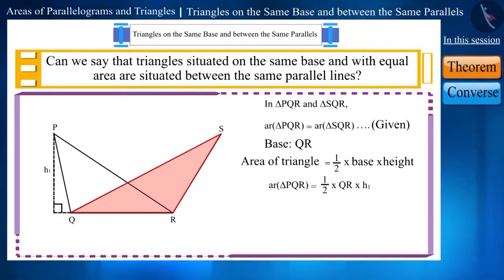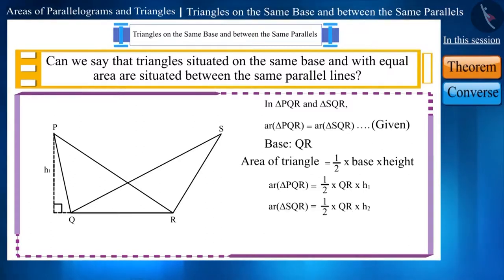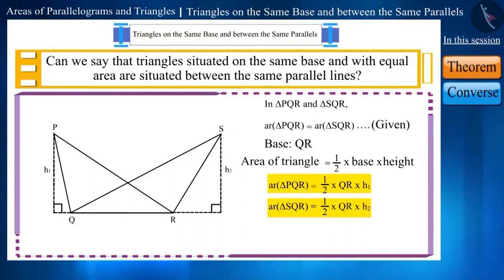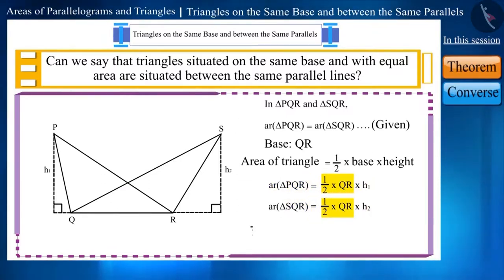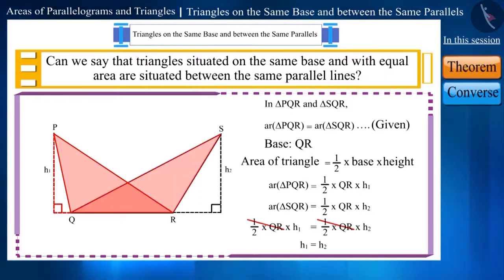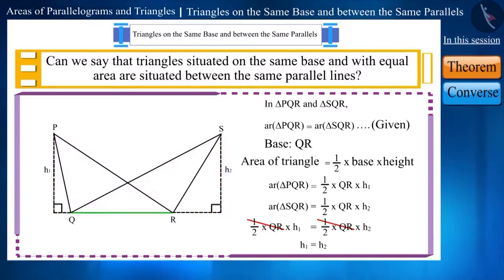Similarly, in triangle SQR, we can use the formula for the area of a triangle and we will get: 1/2 × QR × H2, where H2 is the height of triangle SQR. Now, if we look at these two expressions, 1/2 and the base QR are common. If we solve further, only the height is left. So we can say that H1 is equal to H2. This means the height of triangles PQR and SQR is the same, and vertices P and S will be equidistant from side QR.